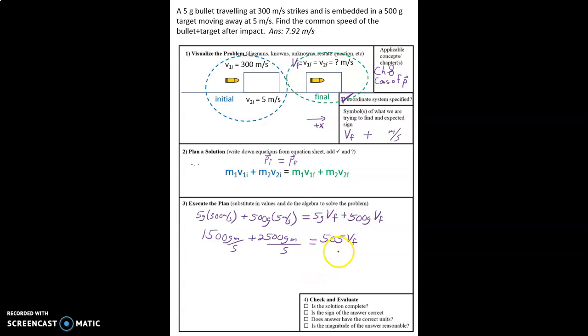Now we can divide both sides by 505, and I had some units there that got lost, supposed to be grams over here, 505 grams. So on the left side we have 1500 plus 2500 and that equals 4000, and we divide that by 505 and we get 7.92.